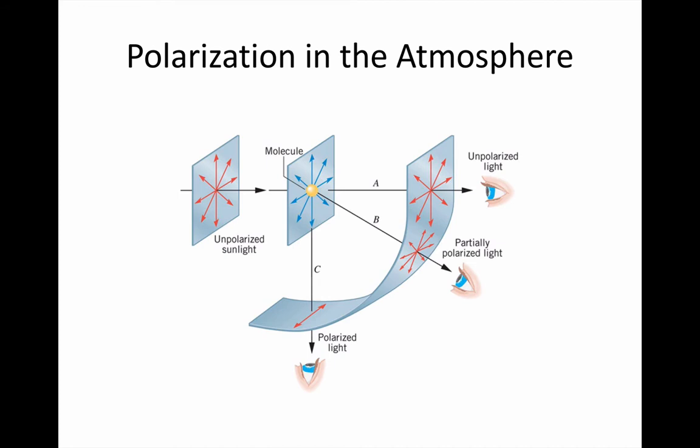They then re-radiate the light. The blue arrows around the molecule show the possible directions of oscillation of the electrons, each one parallel to the electric field component of the photon that hit it. We can see that some electrons have been set to oscillating vertically.